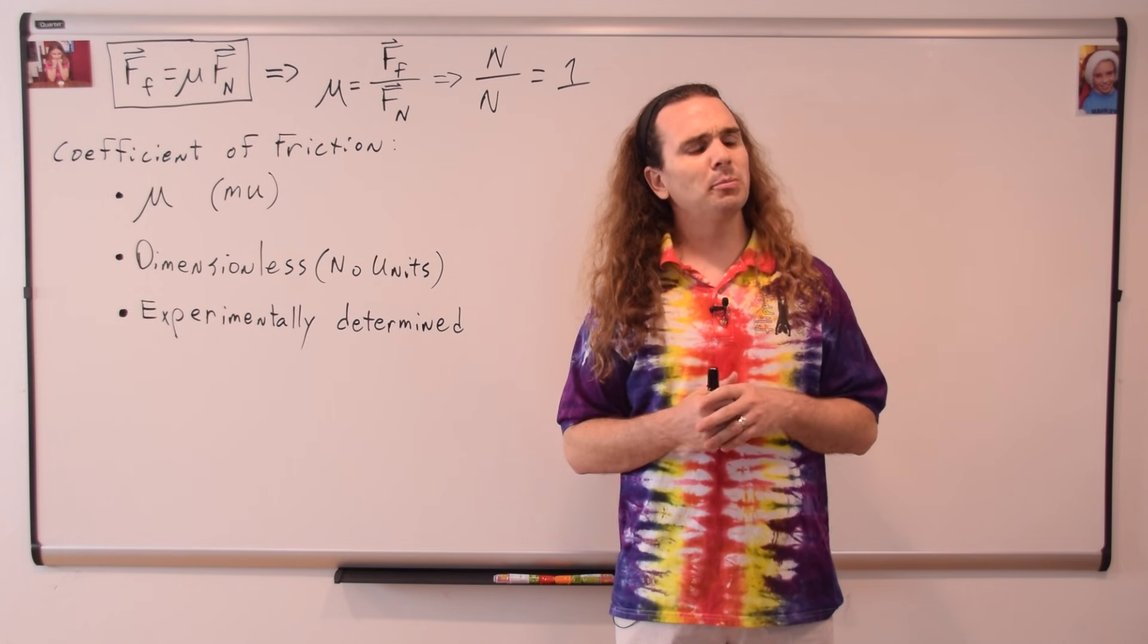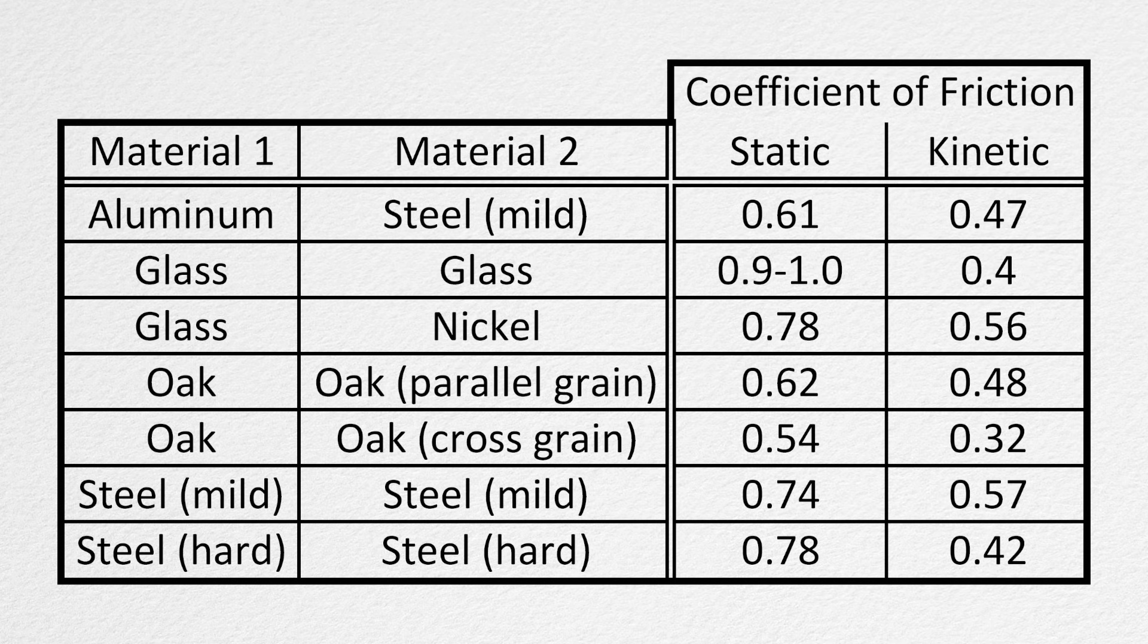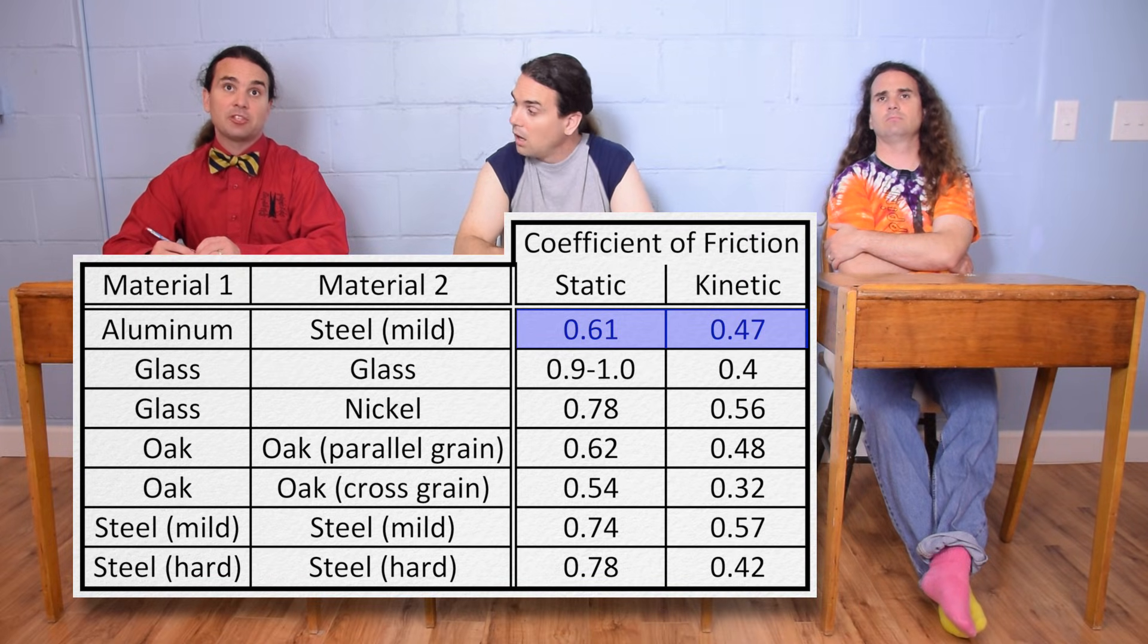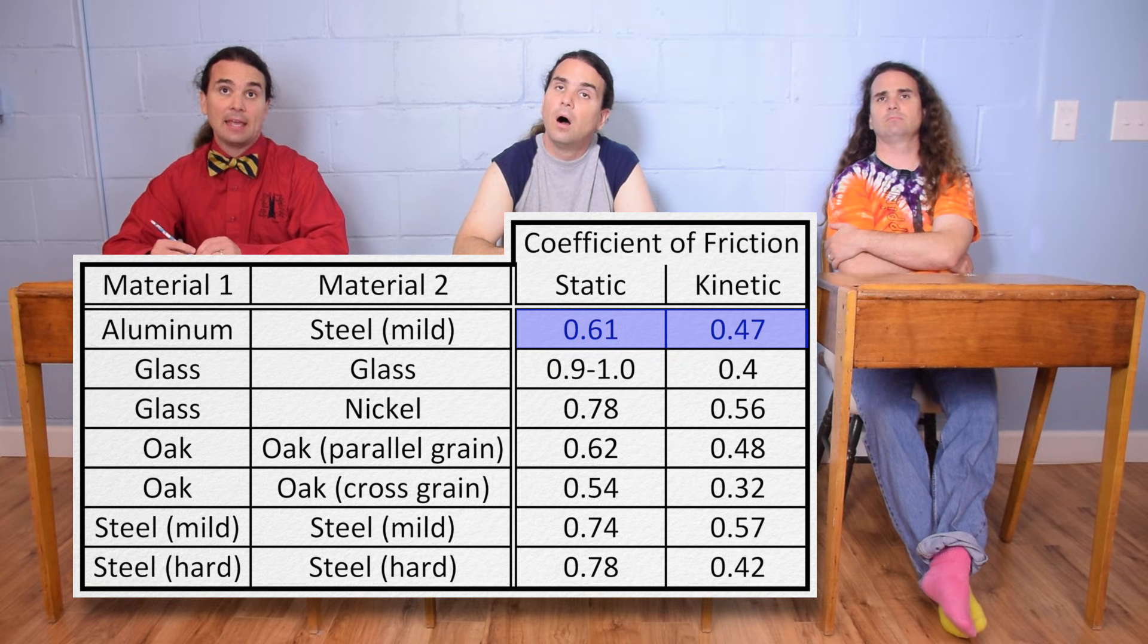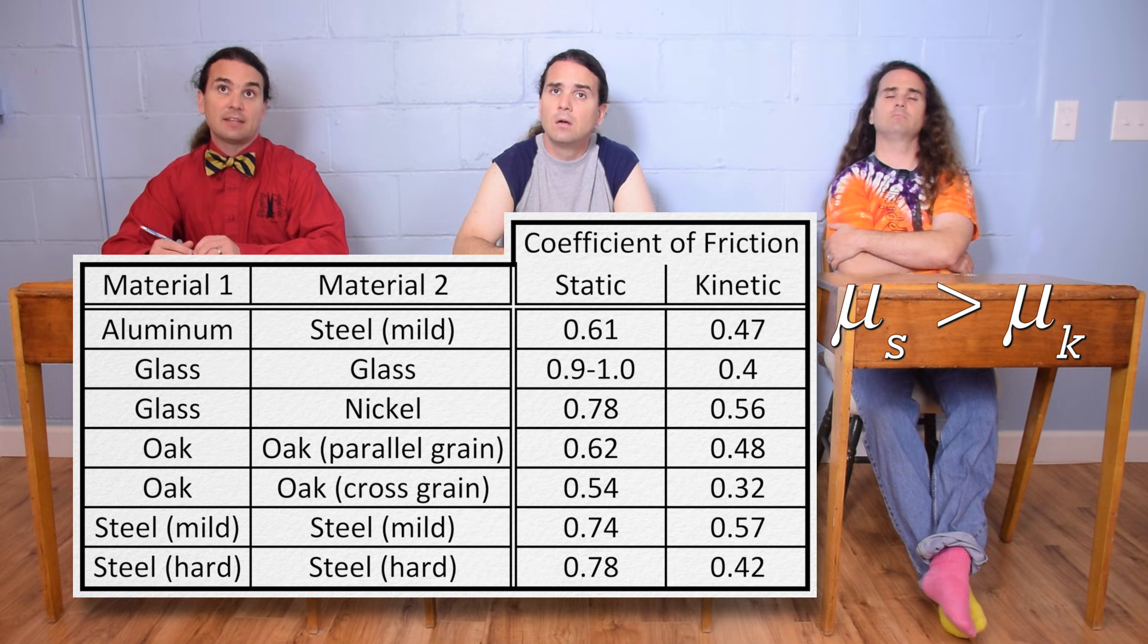Billy, could you please take a look at the reduced table of coefficients of friction and tell me what you see about the relationship between the static and kinetic coefficients of friction for any set of two interacting materials? Well, for aluminum on mild steel, the static coefficient of friction is greater than the kinetic, and for glass on glass, the coefficient of static friction is greater than the coefficient of kinetic friction. It looks like that's true for all of the materials on this data table.